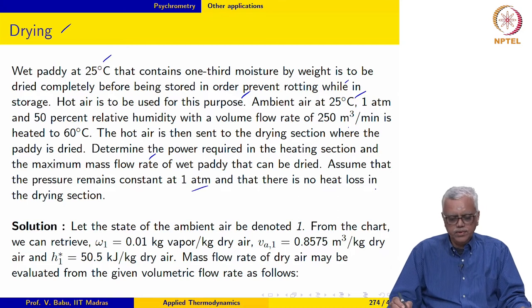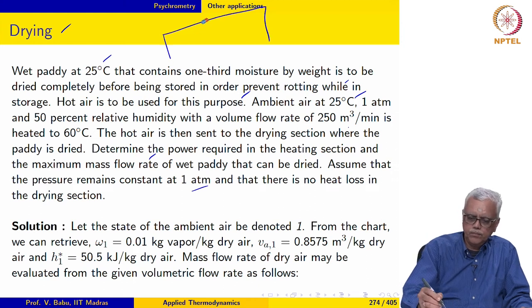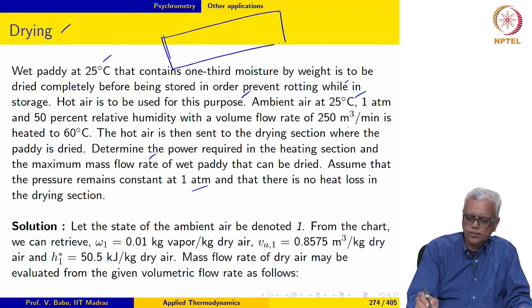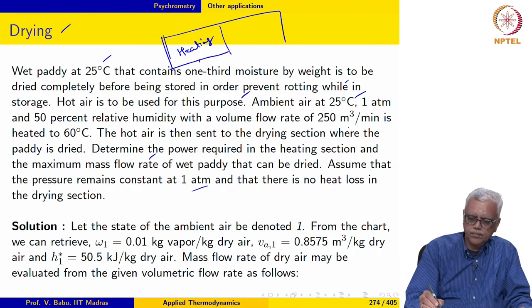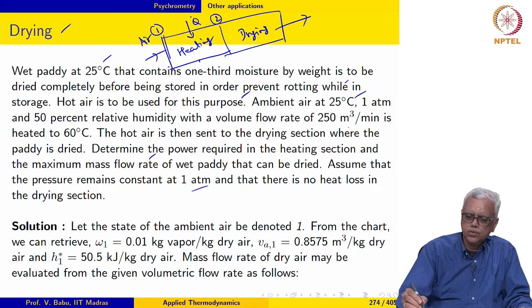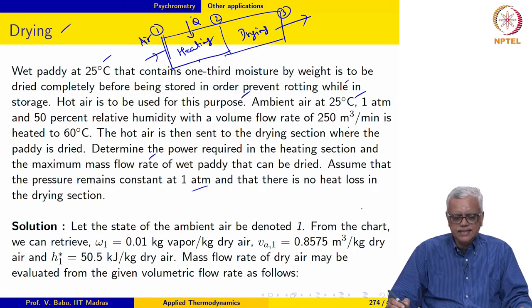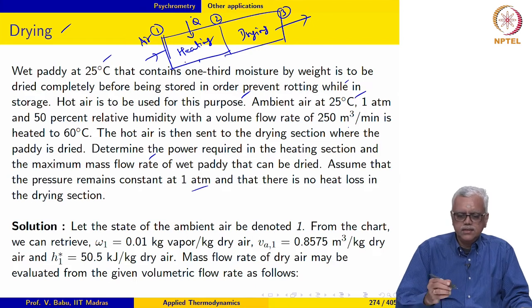The hot air is then sent to the drying section where the paddy is dried. We need to determine the power required in the heating section and the maximum mass flow rate of wet paddy that can be dried, assuming constant pressure and no heat loss. We have two sections: a heating section and a drying section, with state points labeled 1, 2, and 3.